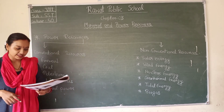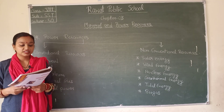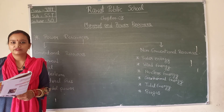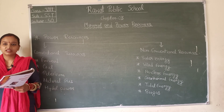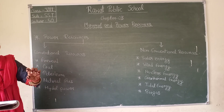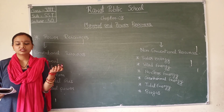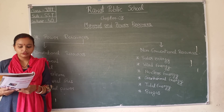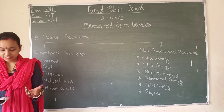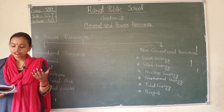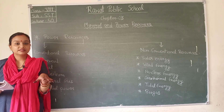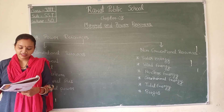Now we will move forward to natural gas. Natural gas is found with petroleum deposits and is released when crude oil is brought to the surface. It can be used as domestic and industrial fuel. Major producing areas in India include the Krishna-Godavari delta, Tripura, and Mumbai.